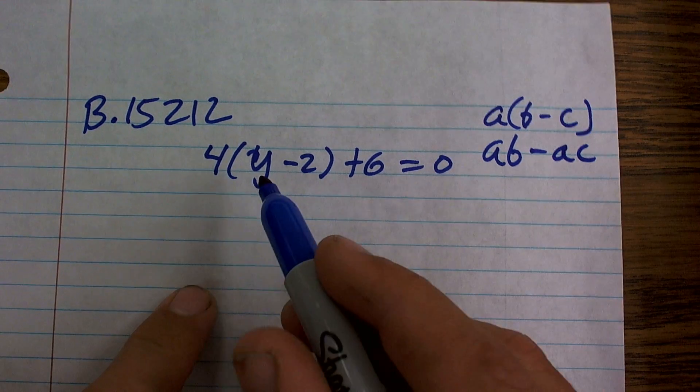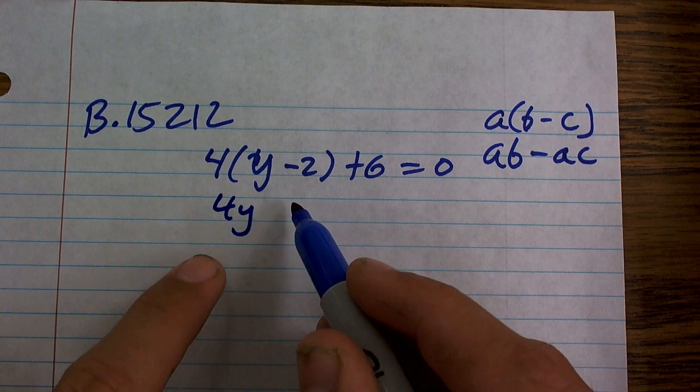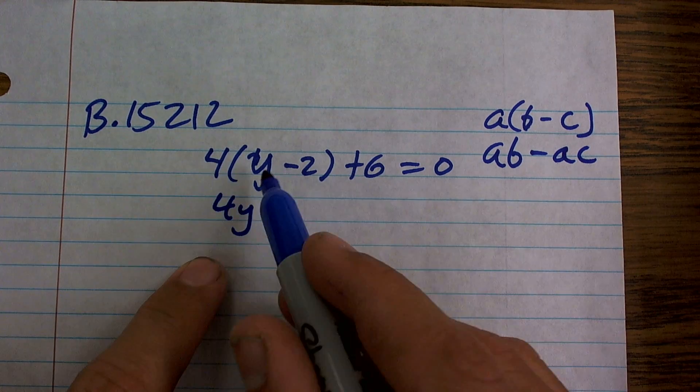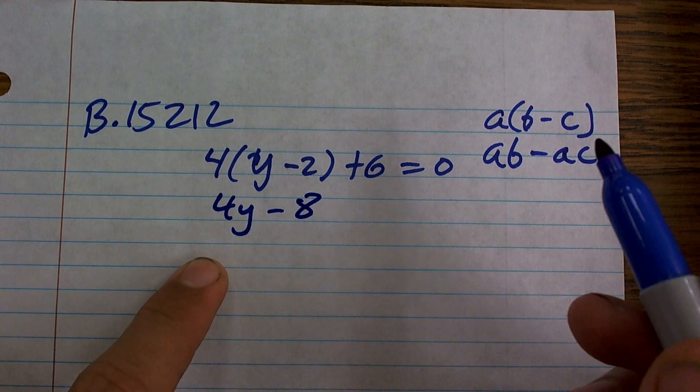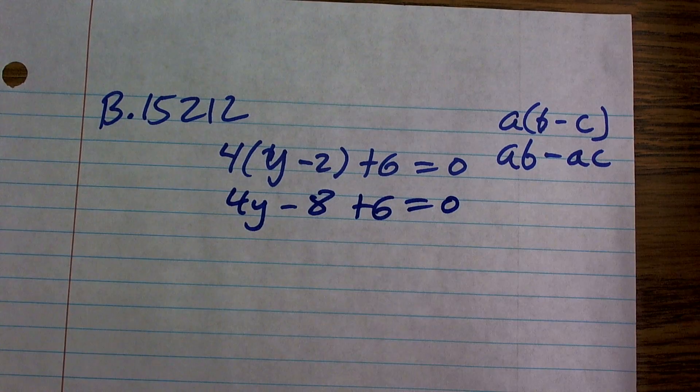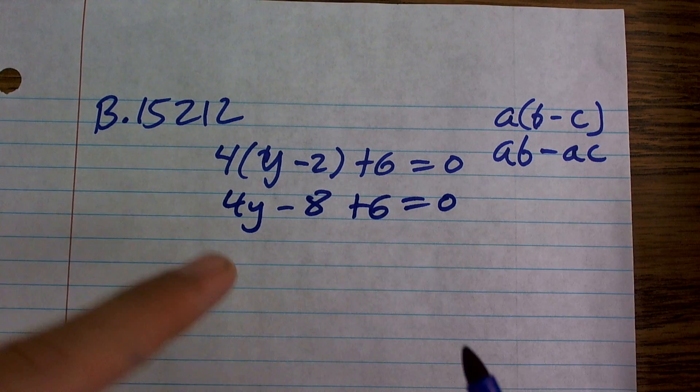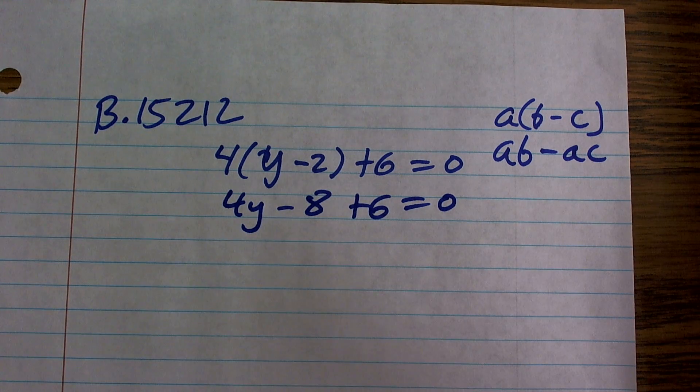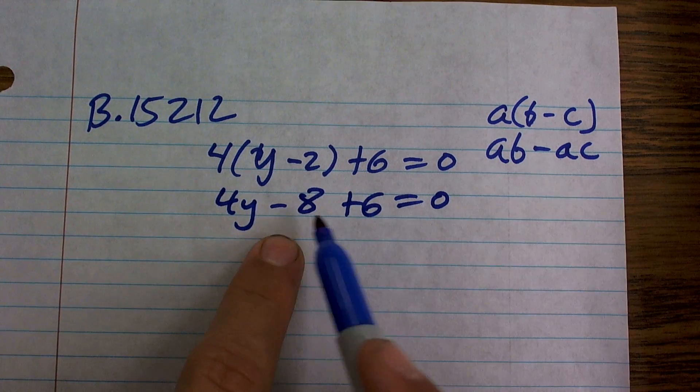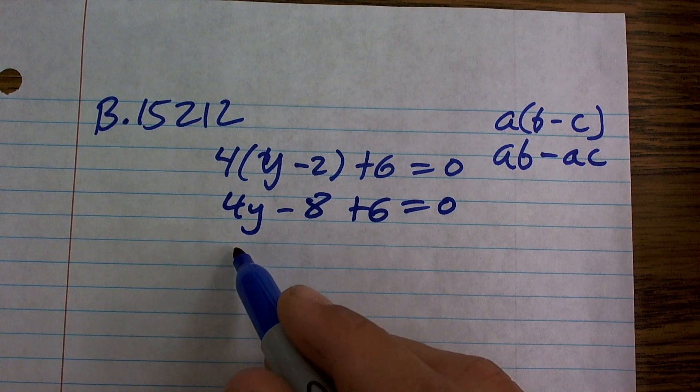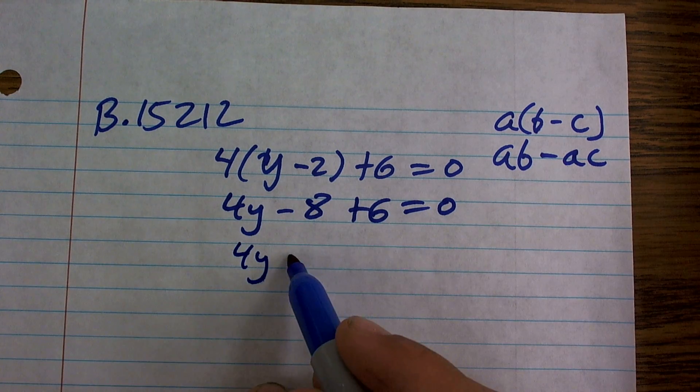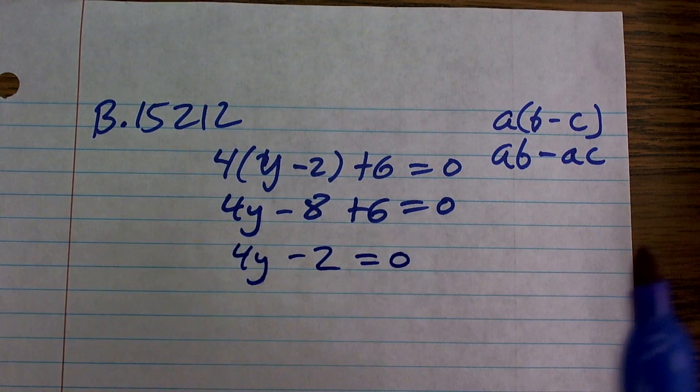So what I need to do first here is multiply my 4 times y, and then 4 times negative 2, which will be a negative 8, plus 6 equals 0. Now you notice I have two numbers that I can combine. I don't need to use the inverse operation for these. I can just combine these and use the inverse operation once. So I can say 4y minus 2 equals 0.